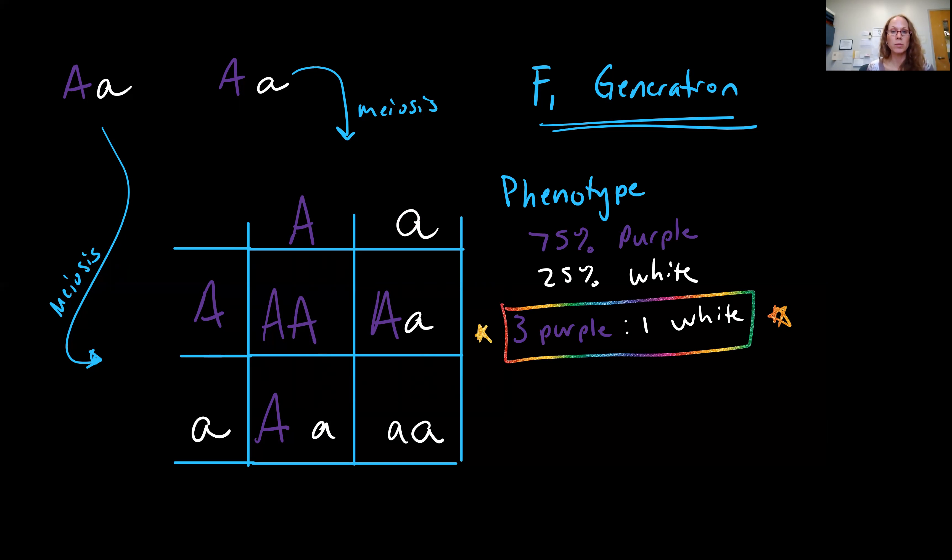Typically, here, instead of representing these as percentages, 75%, 25%, we often see it listed as the ratio three to one. Now, this is classic Mendelian ratio. When you're crossing two heterozygous individuals, you expect three to have the dominant form, one to have the recessive form.